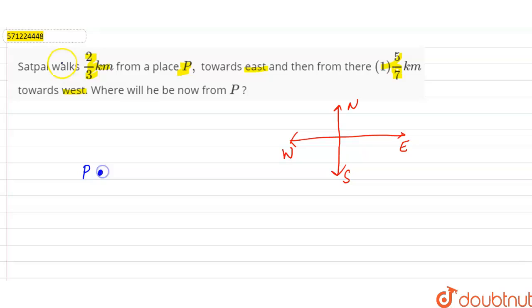Satpal walks 2/3 kilometer from place P towards east. So from point P, he walks towards east. This is the distance covered by him: 2/3 kilometer towards east. Now after covering 2/3 kilometer, he is here. Now after that from there...